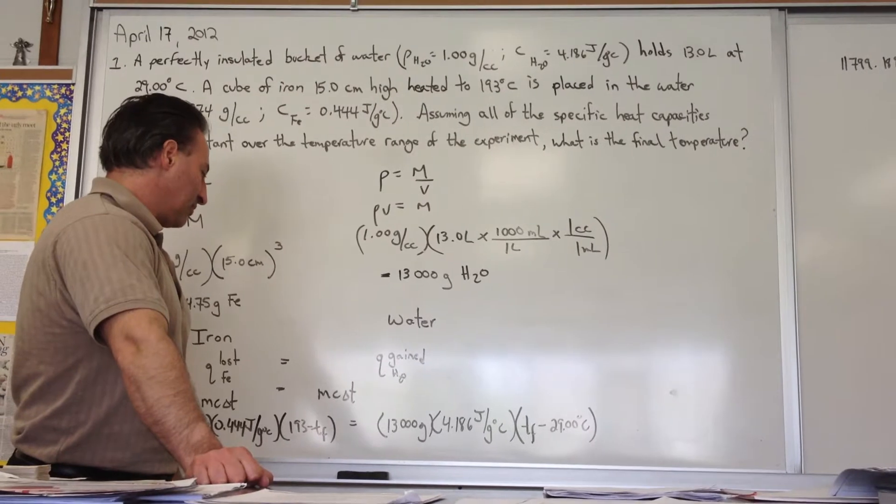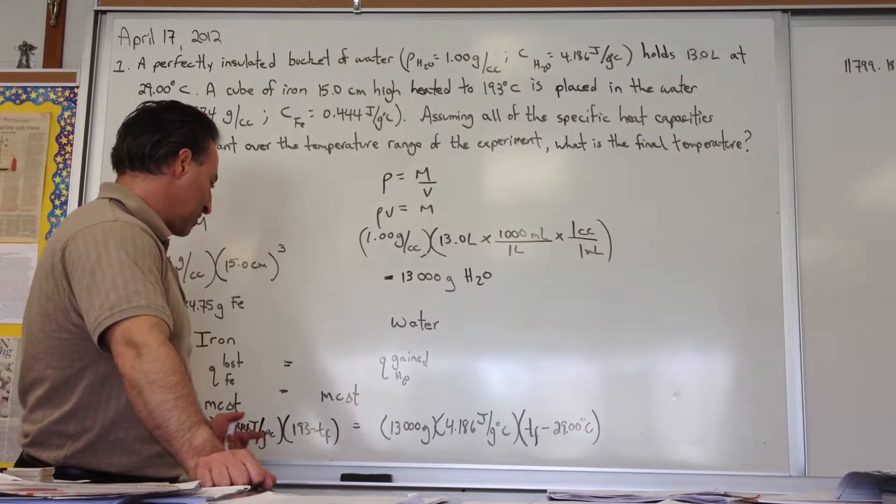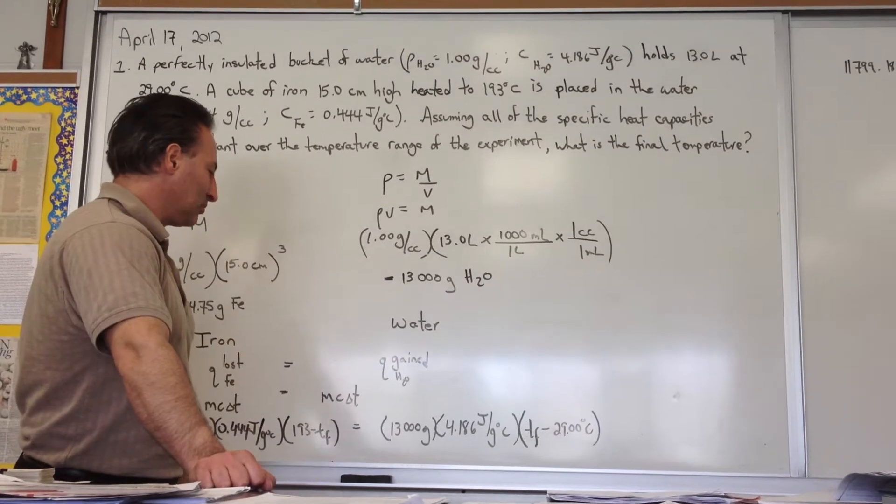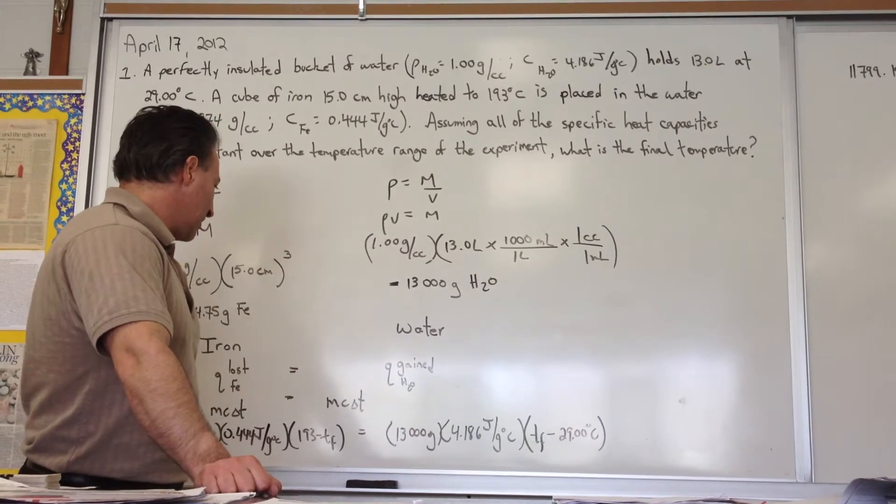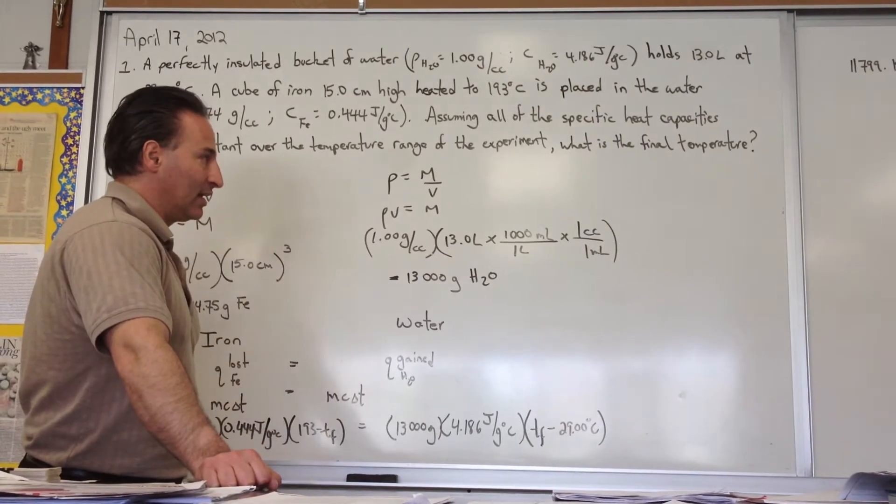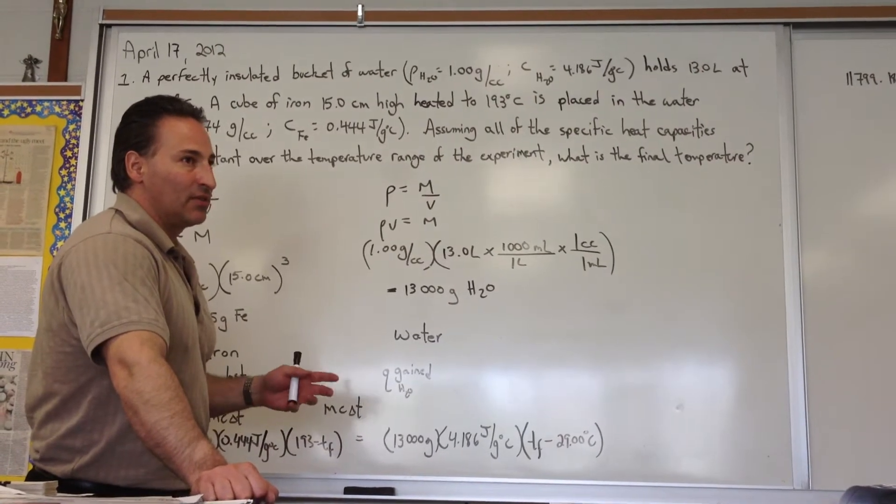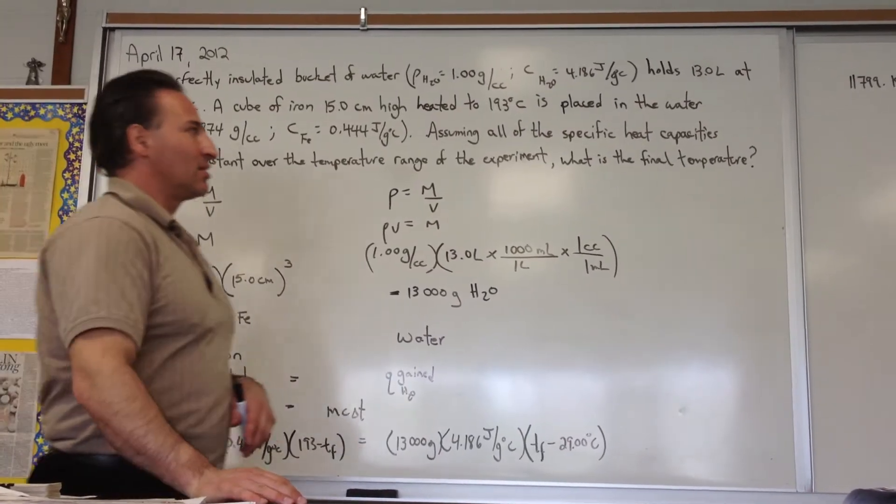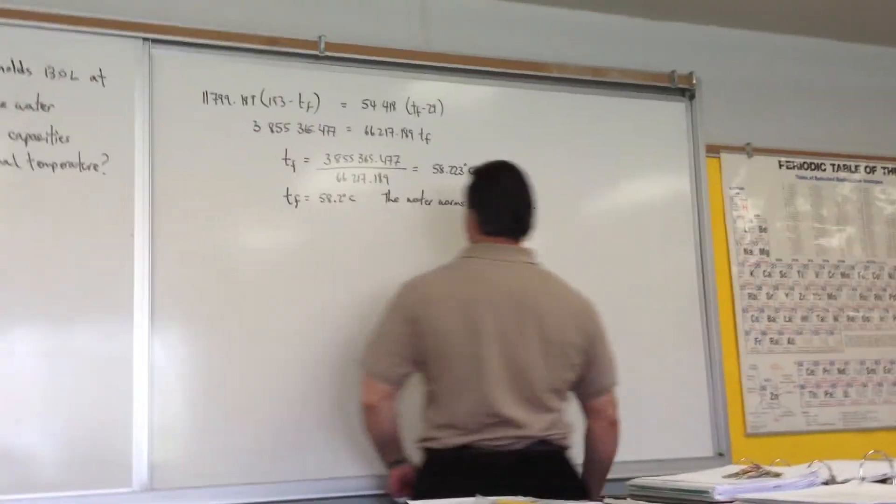It just makes it easier to do the problem if you keep everything positive and then worry about the sign conventions at the end. Over the years, I've noticed that when students are asked to keep track of the sign conventions during solving the problem, they end up making mistakes. So I prefer that you do the calculation without worrying about the sign conventions until the very end. Then just recall that if something is exothermic, the sign convention is for it to be negative. Negative heat means the process is exothermic, whereas positive value of Q means the process is endothermic.